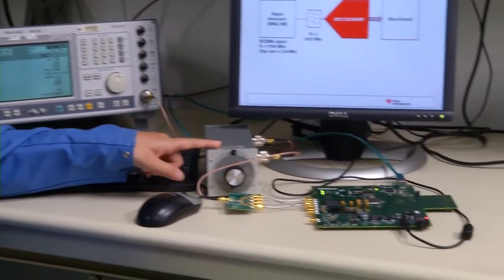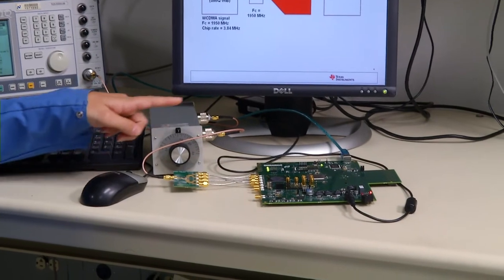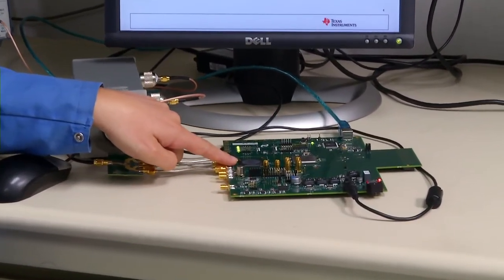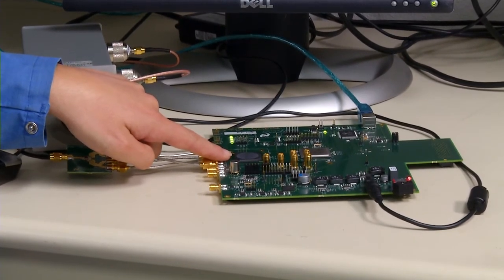So we have here the signal generator, and it's followed by the bandpass filter, and then it's sampled by the ADC12D1800RF. So let's go ahead and take a look at this in WaveVision 5.